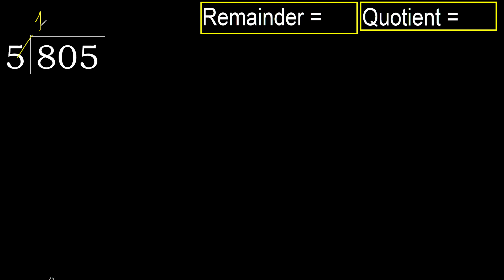Multiply by 1 is 5, it is not greater. 8 minus 5 is 3. Next, 30.